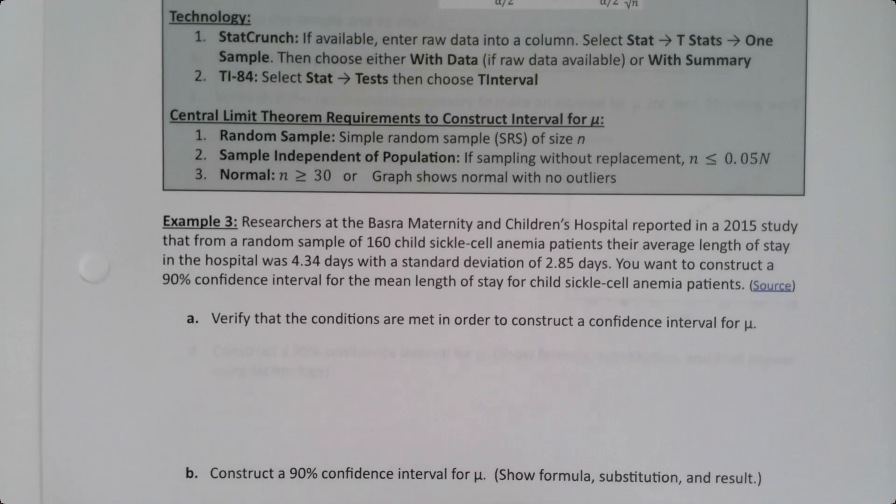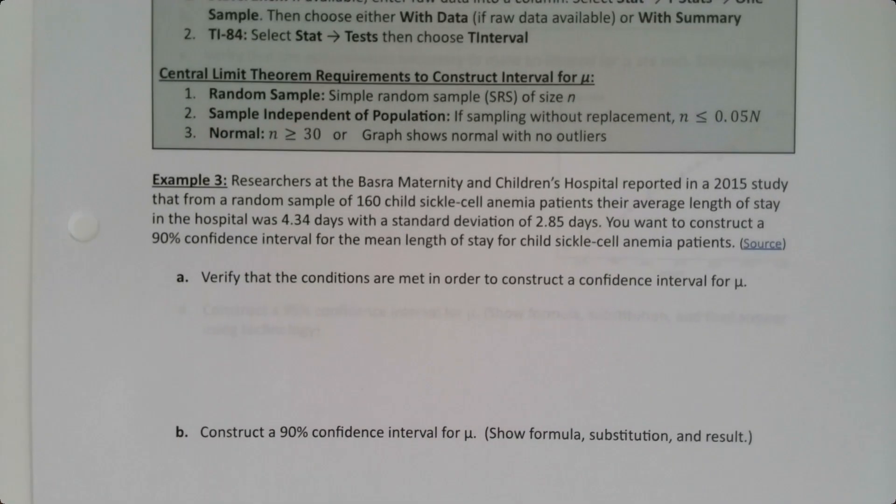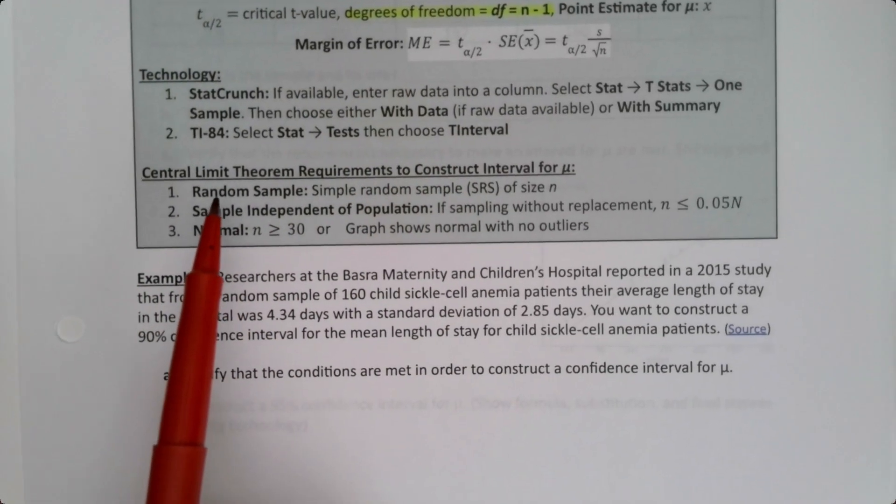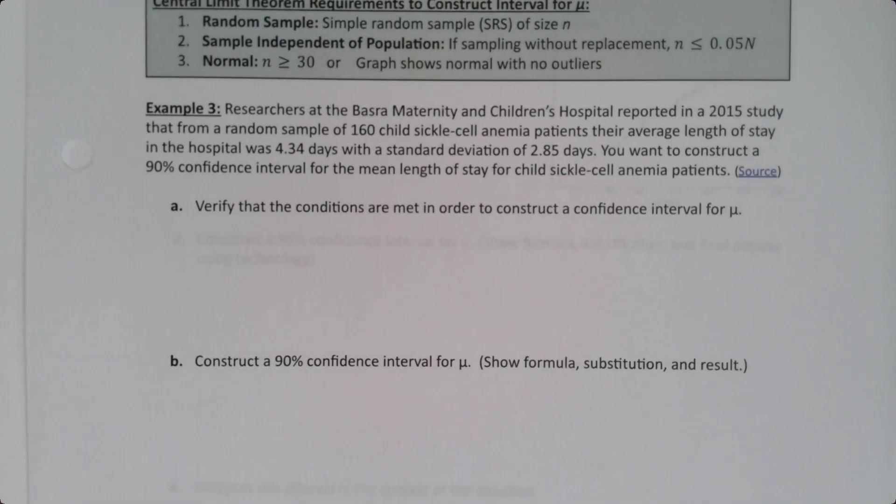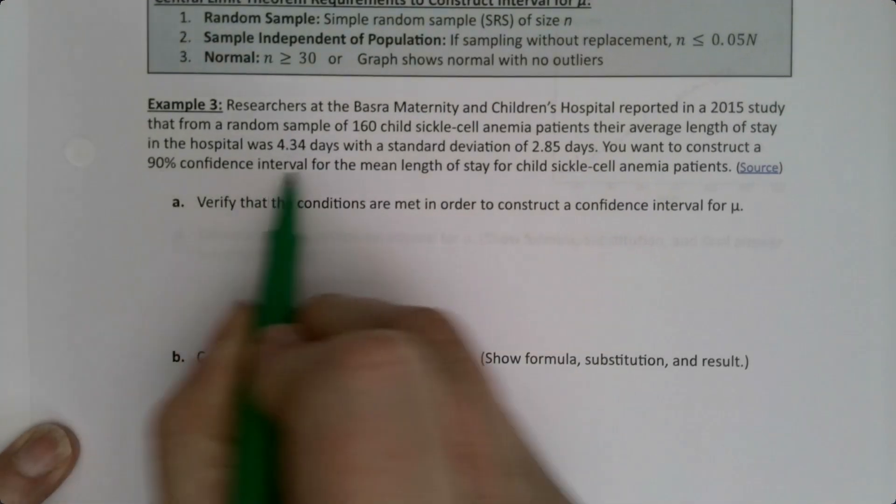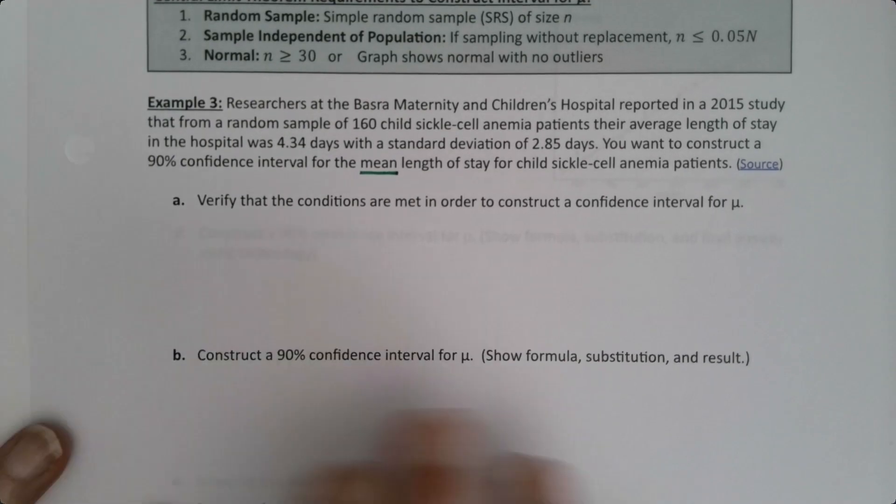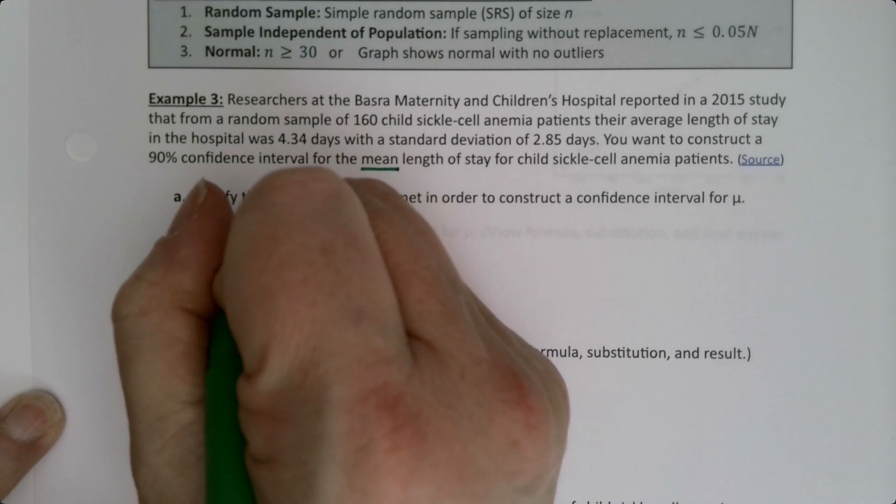Okay, so let's do it for the big problem. Don't we love it? And of course, I should mention that all of this is predicated on the fact that we have to have our requirements, our conditions met, otherwise we can't do any of it. That goes without saying because we've been doing that a lot lately. So researchers at the Boston Maternity and Children's Hospital reported in a 2015 study that from a random sample of 160 child sickle cell anemia patients, their average length of stay in the hospital was 4.34 days with a standard deviation of 2.85 days. You want to construct a 90% confidence interval for the mean length of stay for child sickle cell anemia patients. So you're trying to construct a confidence interval for the mean, which means you're in this section. Now the first thing we're going to do is verify our conditions, our requirements.